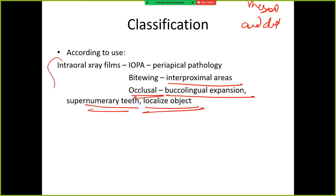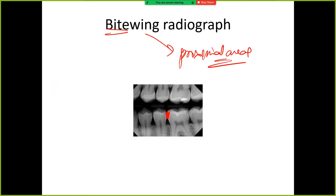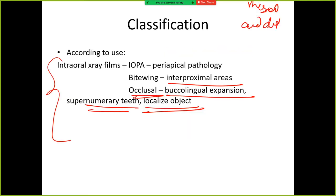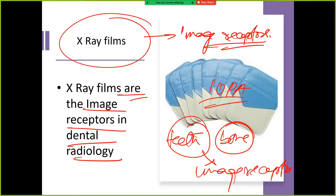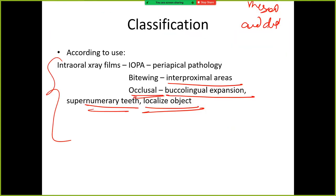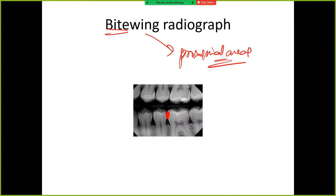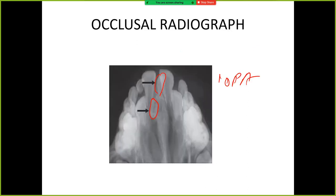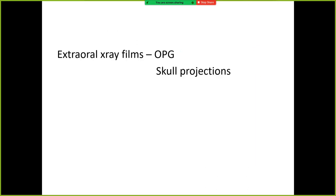So these are intraoral x-ray films. What were the intraoral types we discussed? First, IOPA — intraoral periapical. Then we have bite wing. And then we have occlusal radiograph.